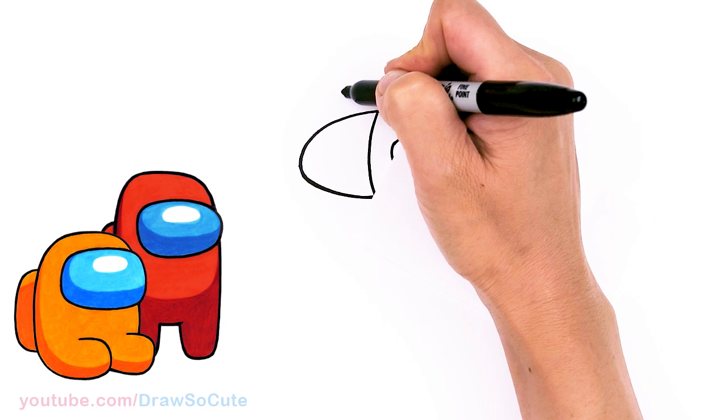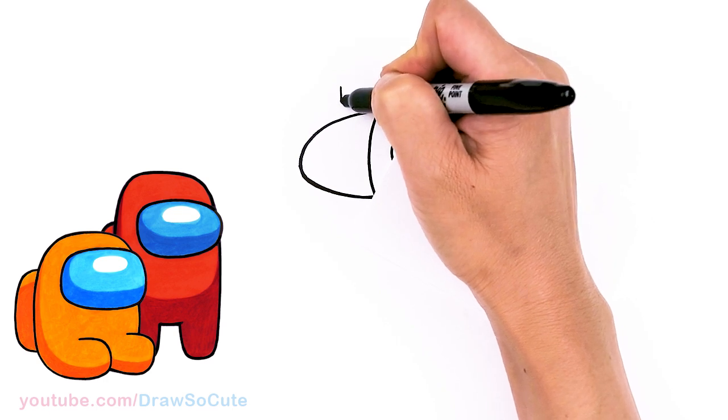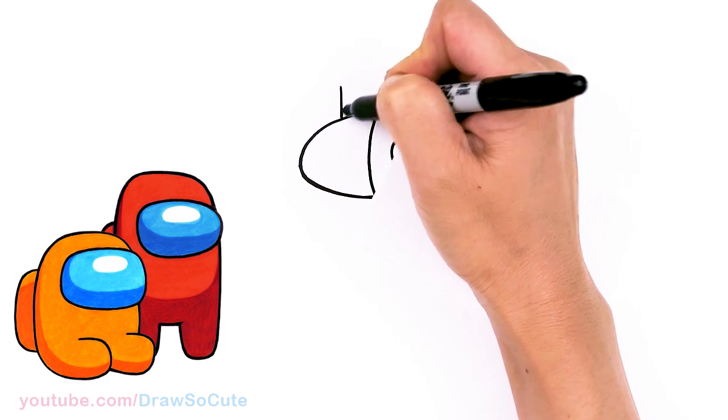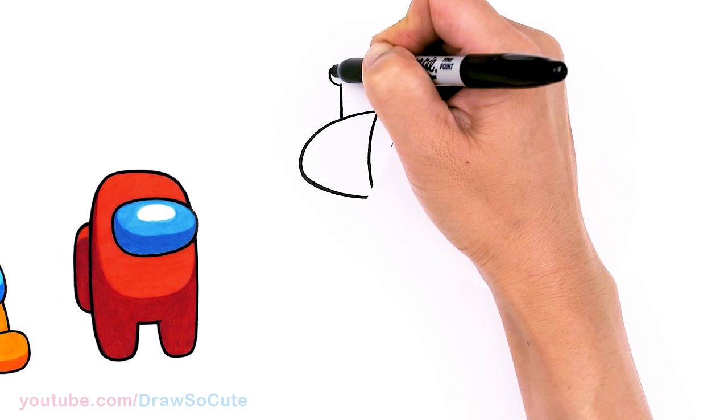And then from there, let's come to the top right here in this area. I'm going to add a little antenna. So just a straight line and a circle.